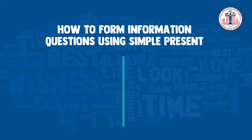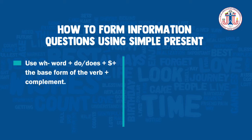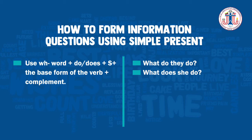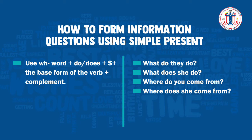How to form information questions using simple present. Use a WH word plus do or does plus the subject plus the base form of the verb plus the complement. Examples: 'What do they do?' 'What does she do?' 'Where do you come from?' 'Where does she come from?'